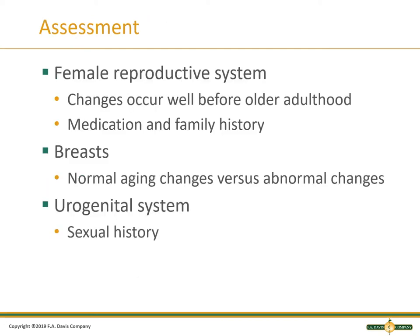Female reproductive system — we understand that changes occur well before older adulthood. There's medication, family history — these are all things that come into play. Breasts: there are normal aging changes, abnormal changes. If they've breastfed, that can cause normal or abnormal changes of the breasts. And then the urogenital system.